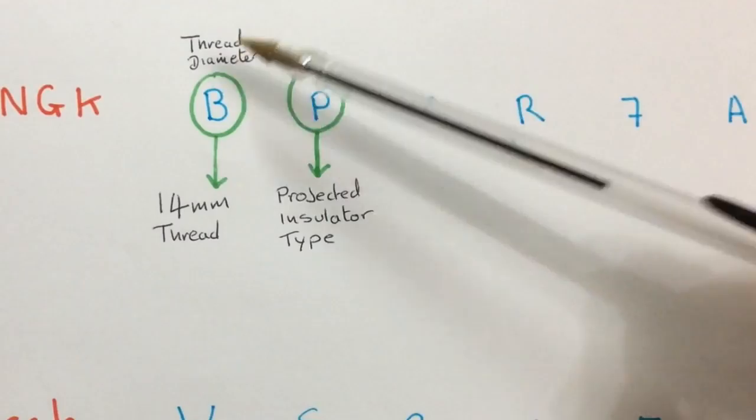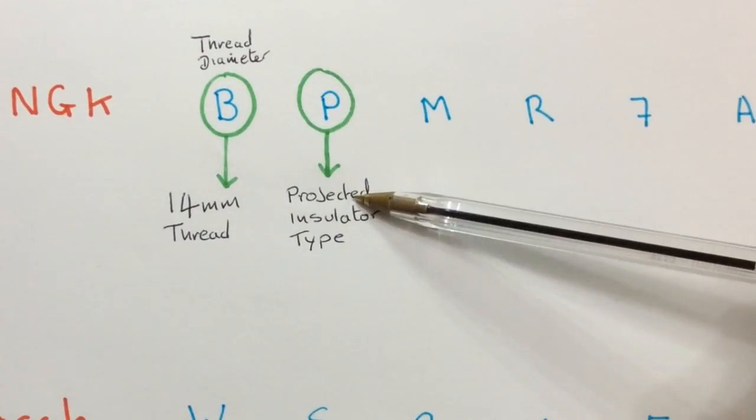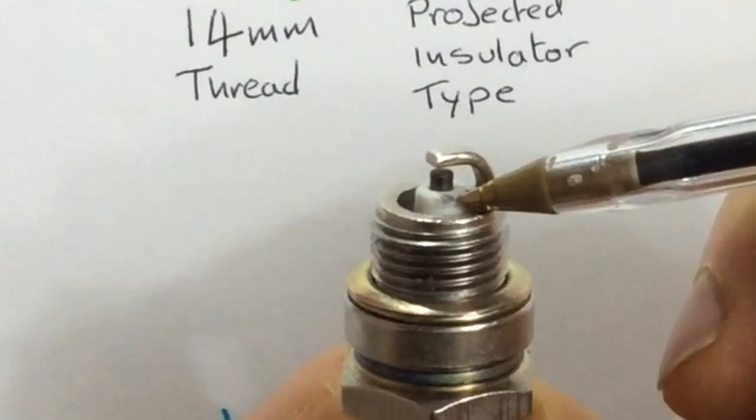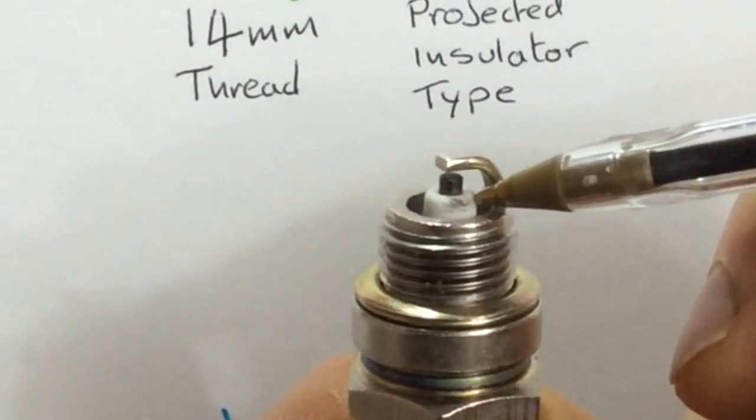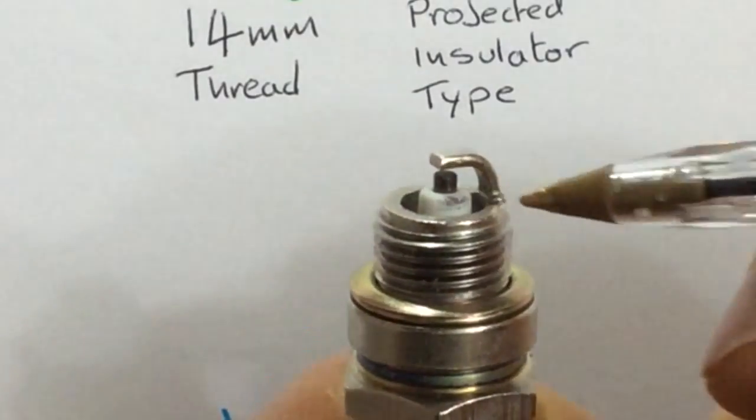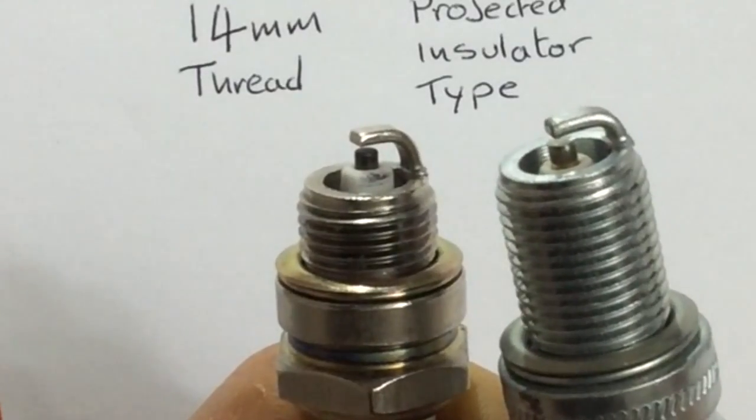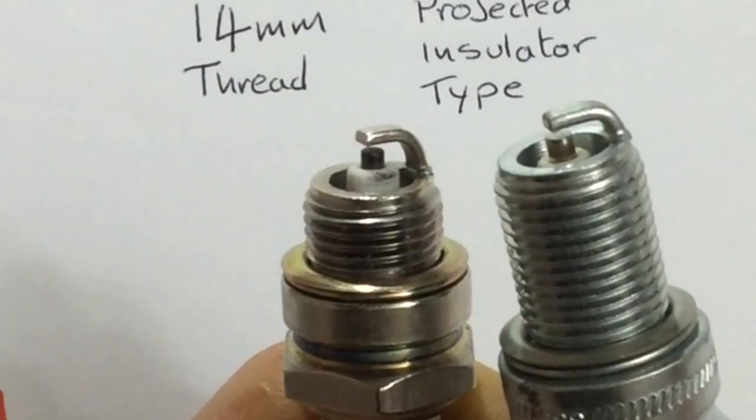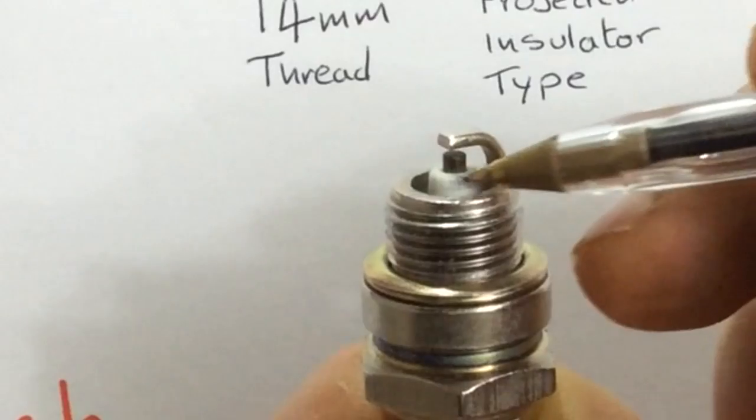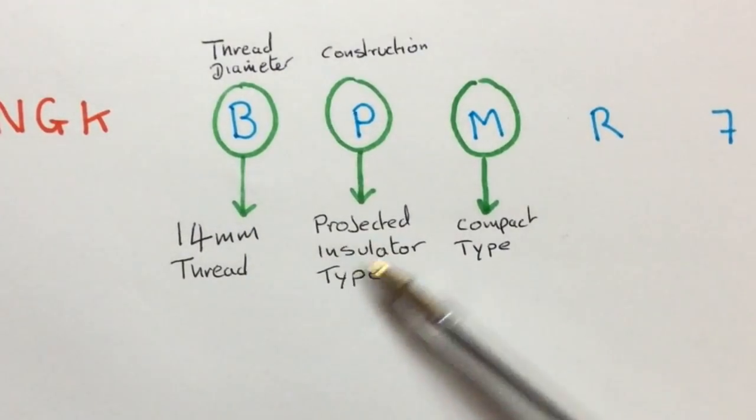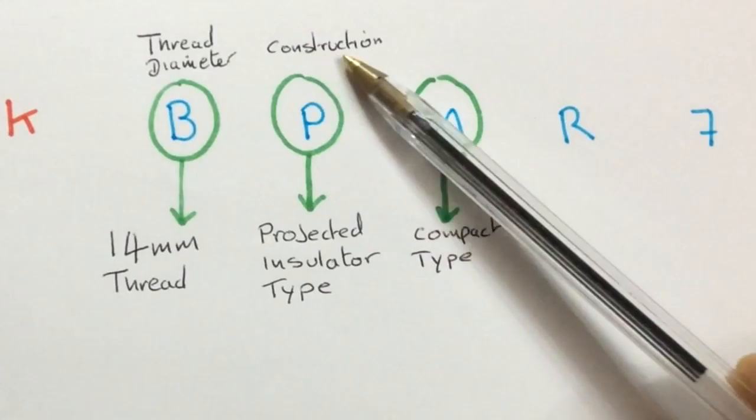B is thread type and P means projected insulator type. If we take a look at the end of the plug here, you can see a white part there. That's the insulator. When compared to this plug, you can see that the insulator there is down lower than the outer ground area. It's what we call a projected insulator. It's a special insulator. So P relates to projected insulator type and that relates to its construction.